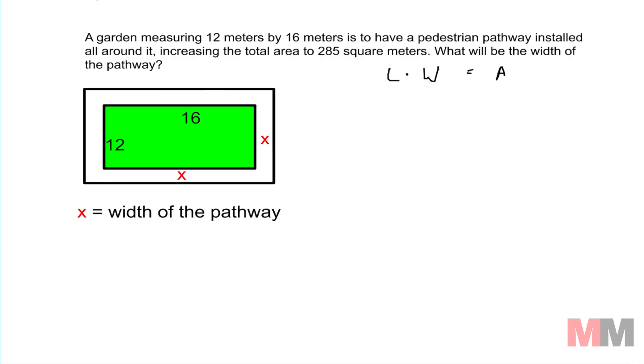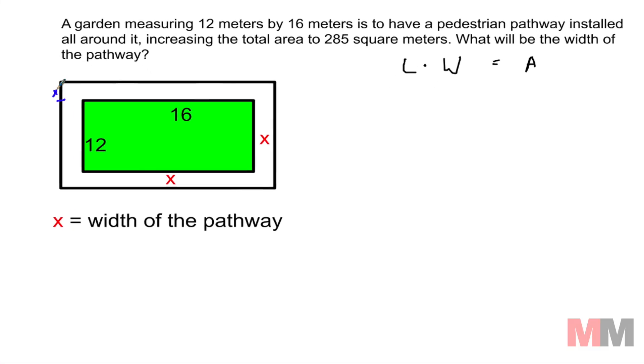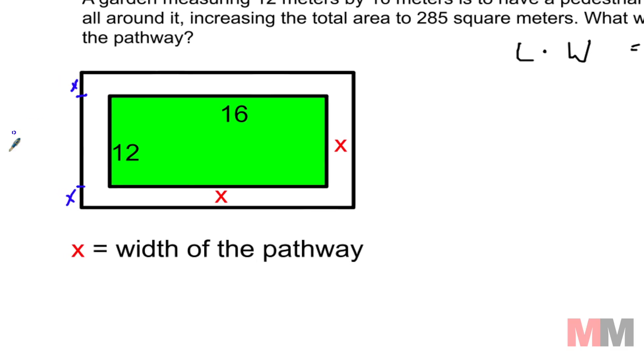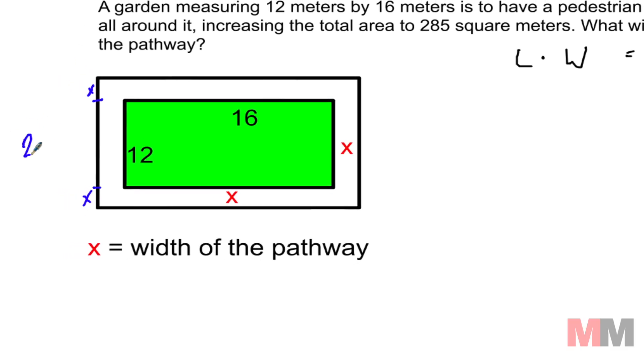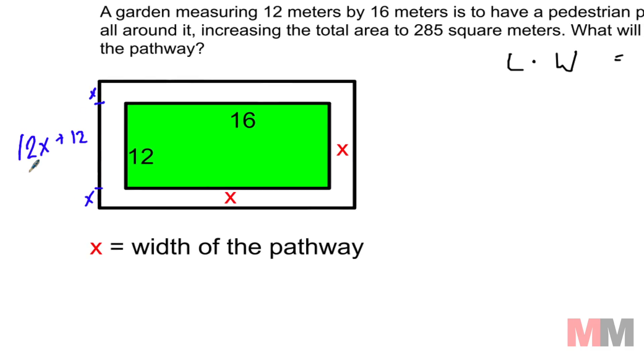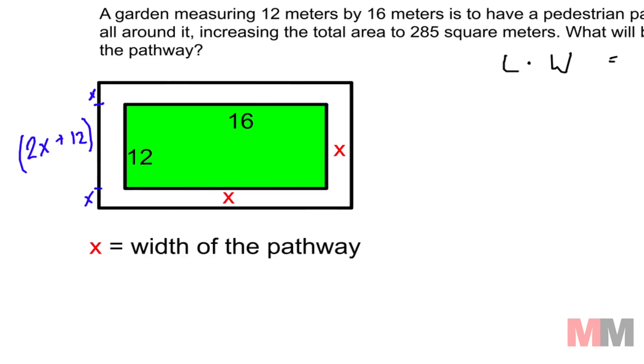So I first need to find the total length of this overall rectangle and the length is right here. If you really observe the length, it's made out of this 12 and 2 pieces of x because this is x long, x meters long. So if I know that that's x meters long and the bottom is also x meters long and this is 12, then I can call this total length 2x coming from these two x's plus 12. So we're going to put that in parentheses like that.